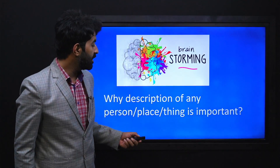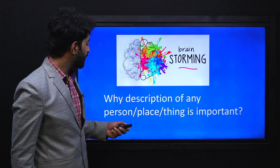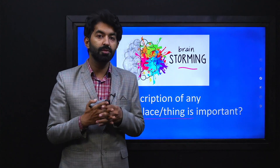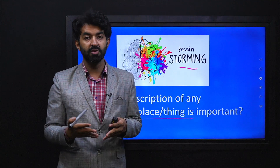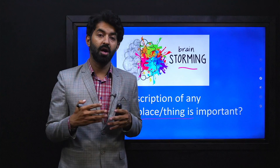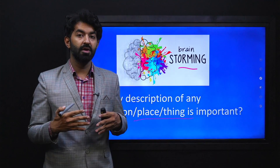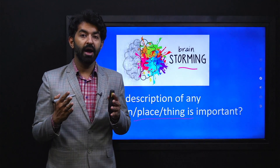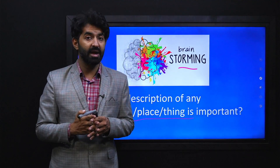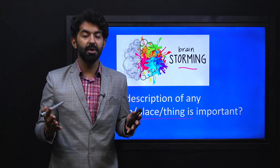Now let's get started with our brainstorming session. Here is a basic question for you: why is description of any person, place, or thing important? Why do we give description when we are telling a story, narrating, or writing — whether biographies, autobiographies, or other texts? Why do you think it is important, and how does it add to the overall meaning of the text?